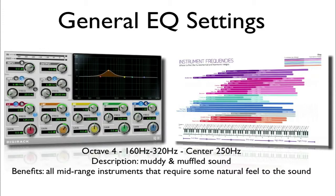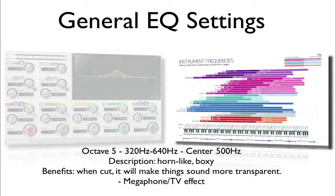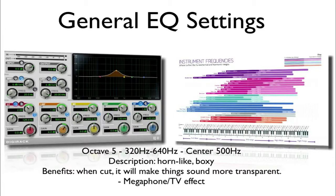Octave 4, 160 Hz to 320 Hz with a center point of 250 Hz, is going to give you a muddy or muffled type of sound. This benefits anything in the mid-range of frequencies, including vocals, that might require a more natural feel or sound. Octave 5, 320 Hz through 640 Hz with a center point of 500 Hz, gives a horn-like or boxy sound, making things sound a little more transparent — kind of like a megaphone or TV effect.